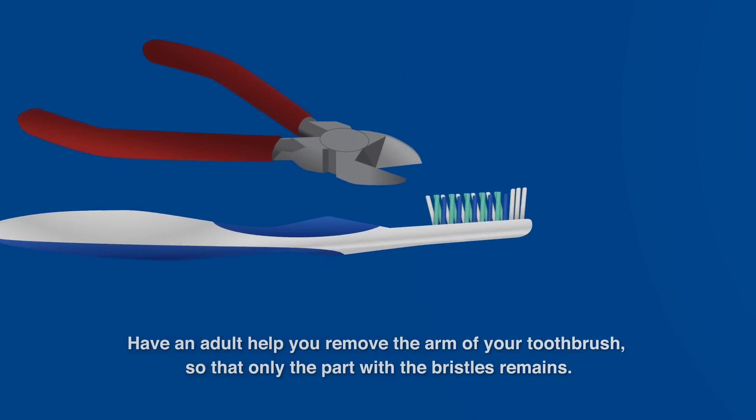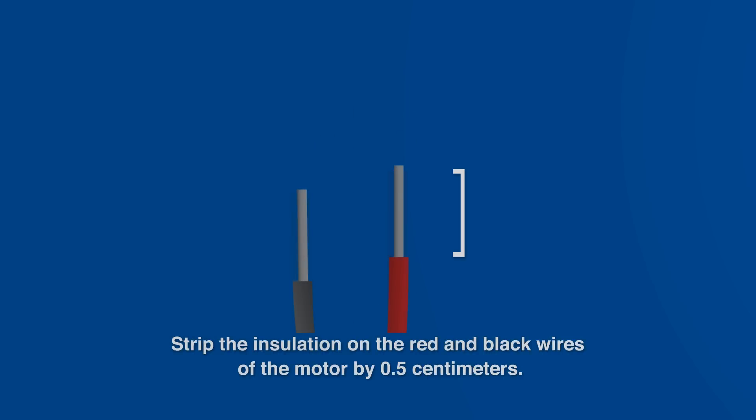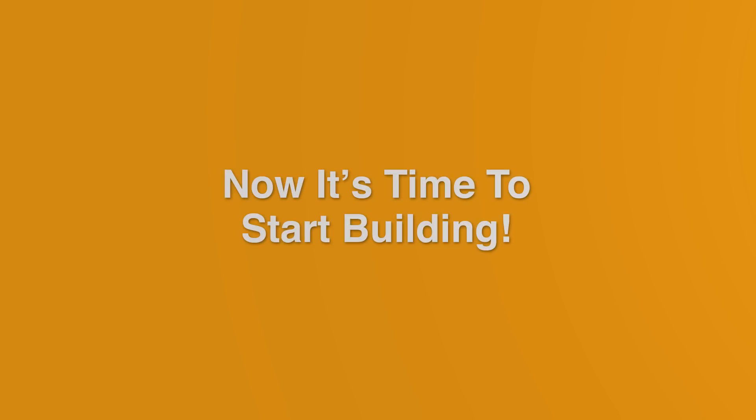Have an adult help you remove the arm of your toothbrush so that only the part with bristles remains. Then, strip the insulation on the red and black wires of the motor by 0.5cm. Now it's time to start building.